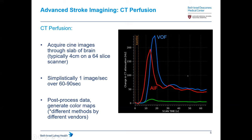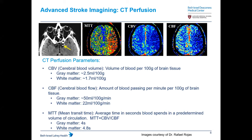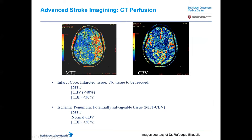You acquire CINE images through a slab of brain — on a 64-slice scanner, typically about four centimeters. Simplistically, you get about one image per second over 60 to 90 seconds, then post-process the data to generate color maps. The technique is entirely vendor dependent. The data is traditionally broken up into cerebral blood volume (CBV) — volume of blood per 100 grams of brain tissue — cerebral blood flow (CBF), and mean transit time (MTT), with the basic formula: MTT equals CBV divided by CBF.